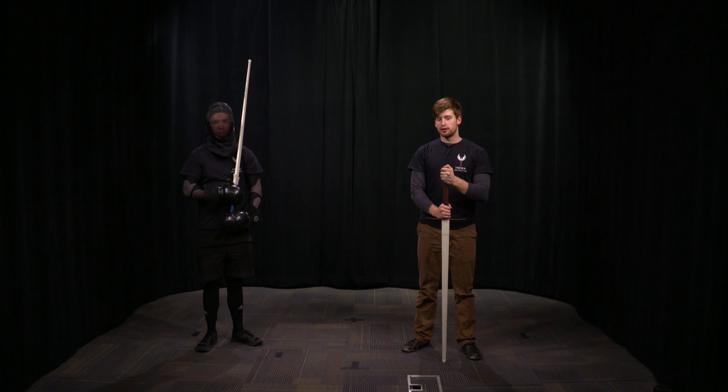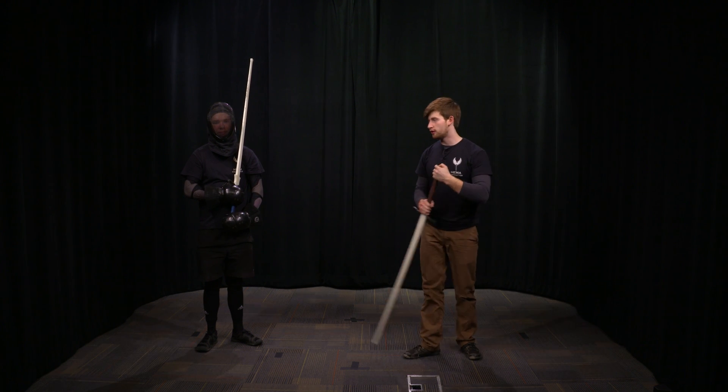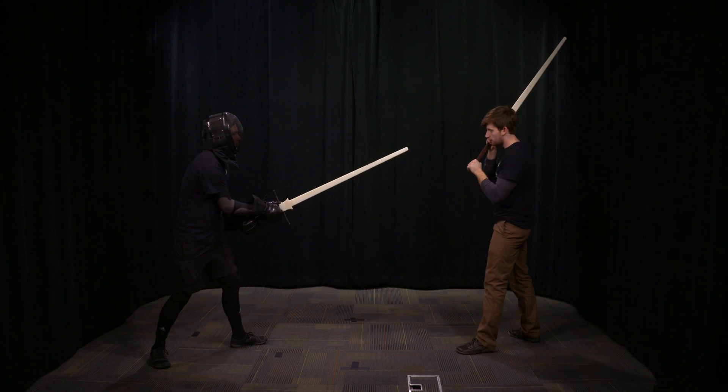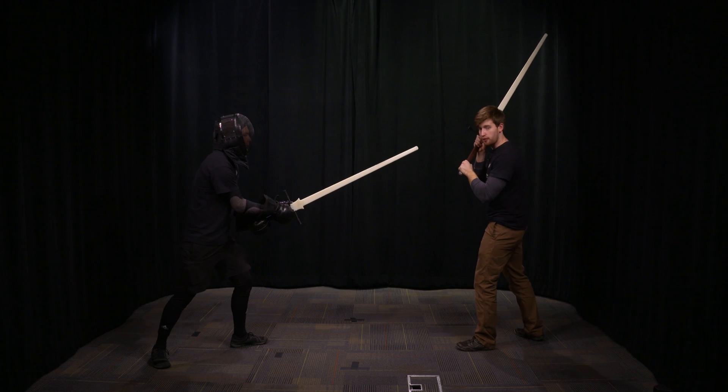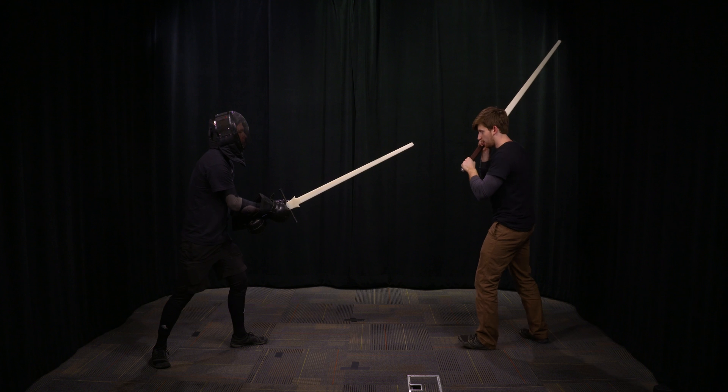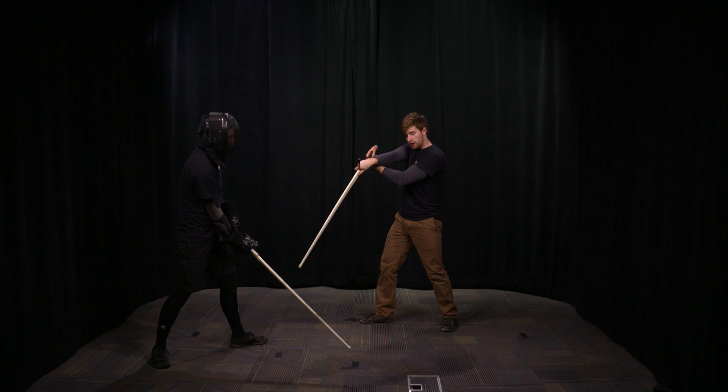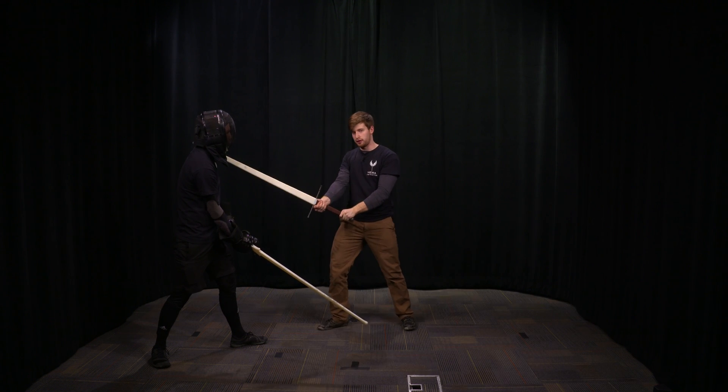The last application of the Crump Howe is to get somebody out of Langanord. So if my opponent's threatening me this way, the point right in my face, I can Crump again down to the flat of his sword and then move into other techniques.